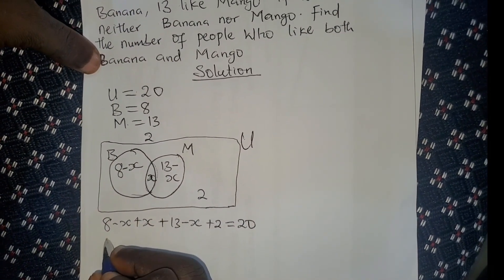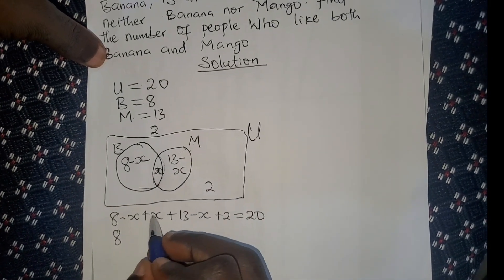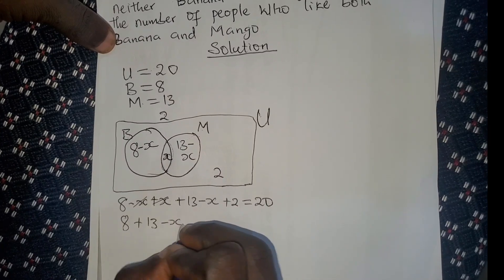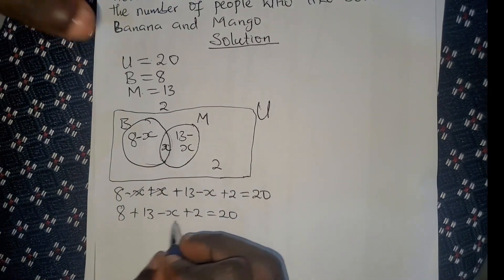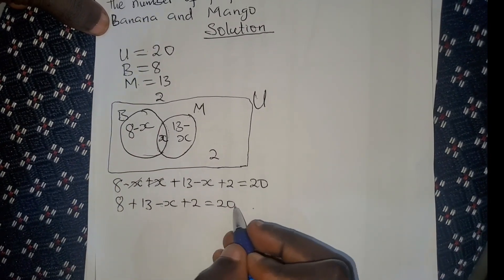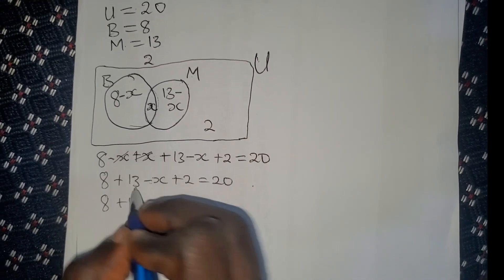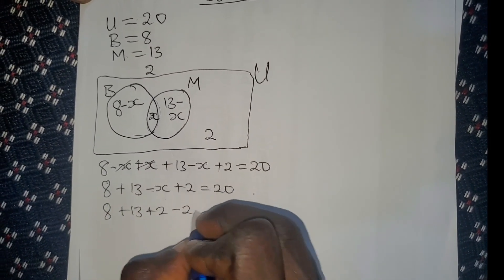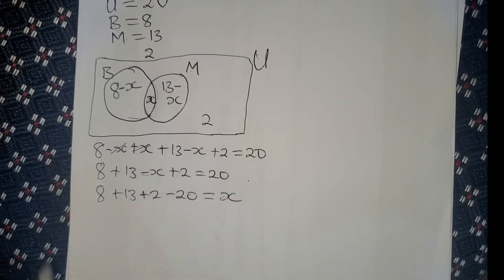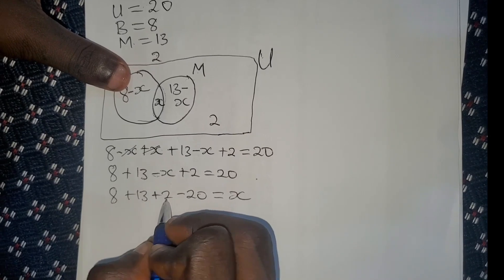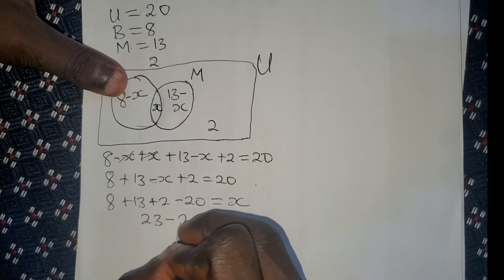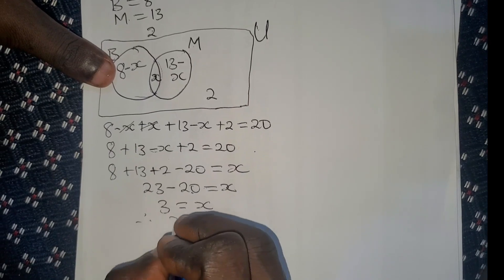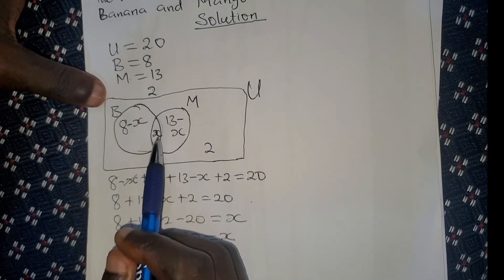The minus x and plus x cancel each other, so we're left with 8 plus 13 minus x plus 2 equals 20. Collecting like terms: bring x to one side and 20 to the other. So we have 8 plus 13 plus 2 minus 20 equals x. That gives us 23 minus 20 equals x, so 3 equals x. Therefore x equals 3, and the number of people that like both banana and mango is 3.